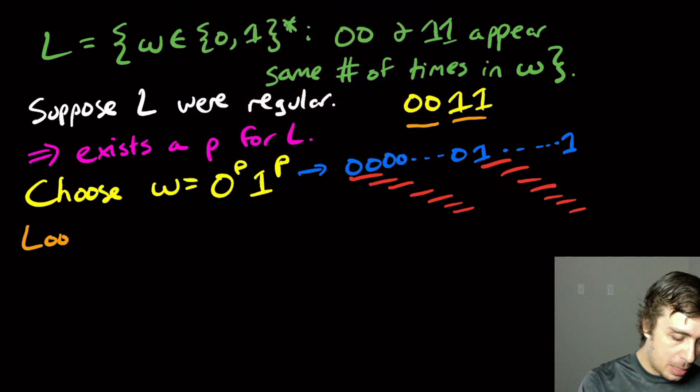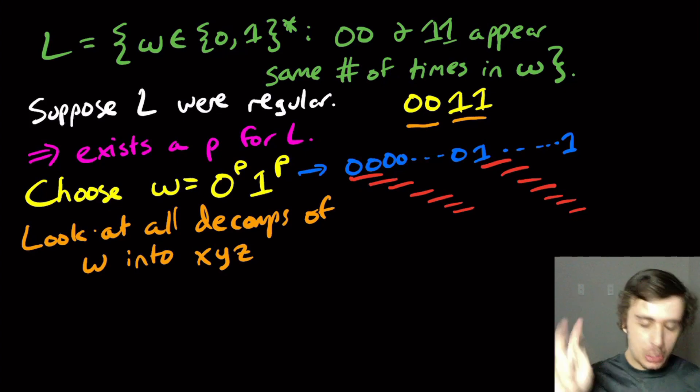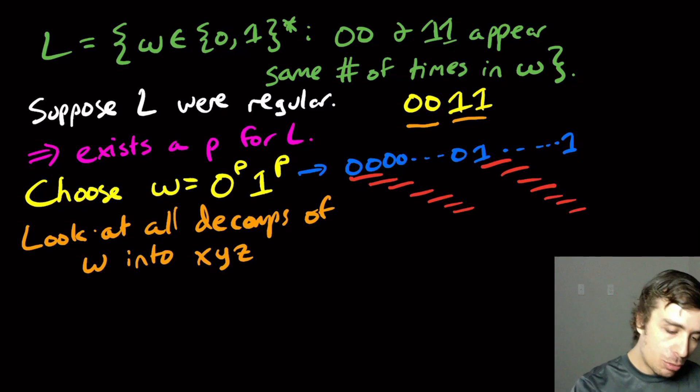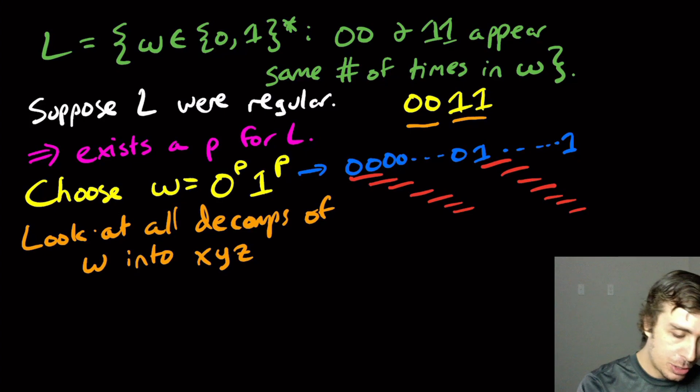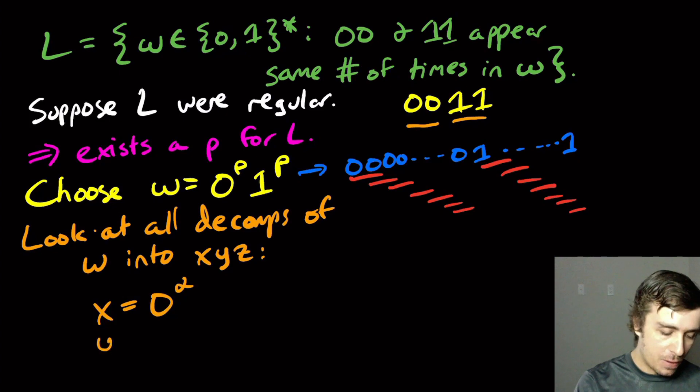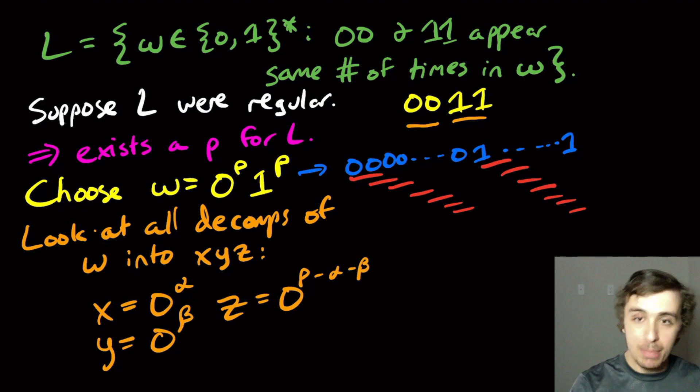So then now we need to look at all decompositions of W into X, Y, and Z according to the three rules, such that XY has length at most P and Y has at least one character in it. Since X and Y are the beginning of the string and have at most P characters, they must live entirely within the zeros. So X = 0^α, Y = 0^β, and Z = 0^(P-α-β) 1^P.